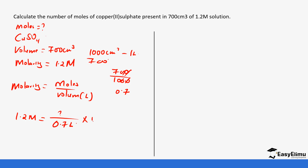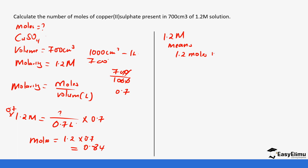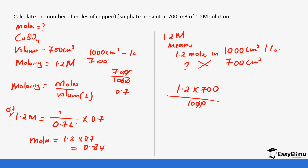So moles equals molarity times volume: 1.2 times 0.7 gives us 0.84 moles. Using the first principle: 1.2 M means 1.2 moles in 1000 cm³. We have 700 cm³ — how many moles? Cross-multiplying: 1.2 times 700 divided by 1000, which equals 1.2 times 0.7, giving us 0.84 moles.